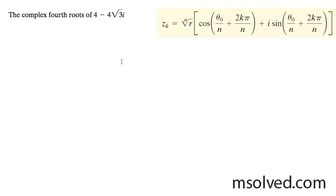We want to find the fourth roots of 4 minus 4√3i. First, we need to find what r is equal to.